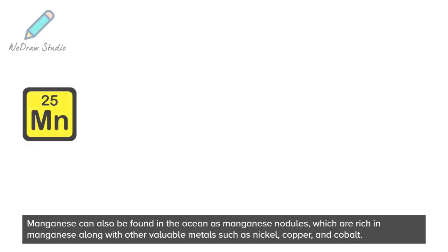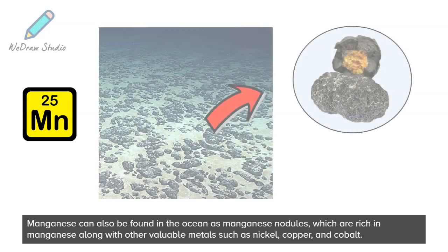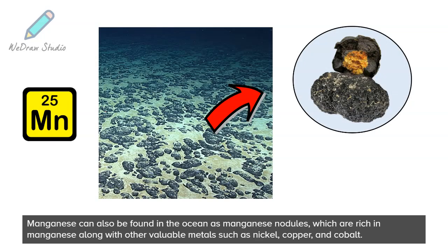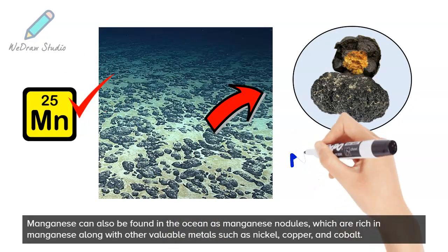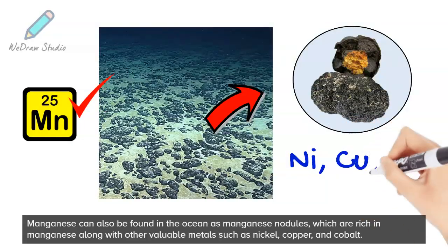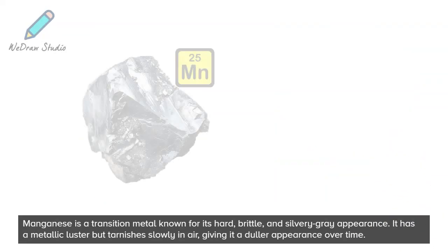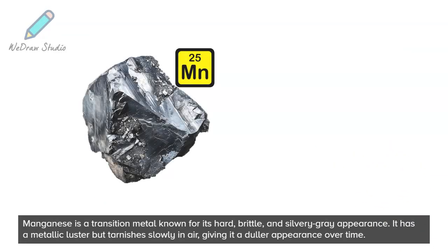Manganese can also be found in the ocean as manganese nodules, which are rich in manganese along with other valuable metals such as nickel, copper, and cobalt. Manganese is a transition metal known for its hard, brittle, and silvery-gray appearance.